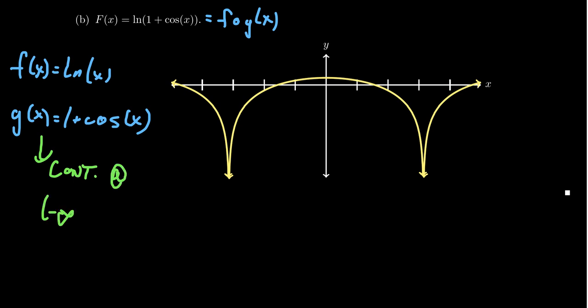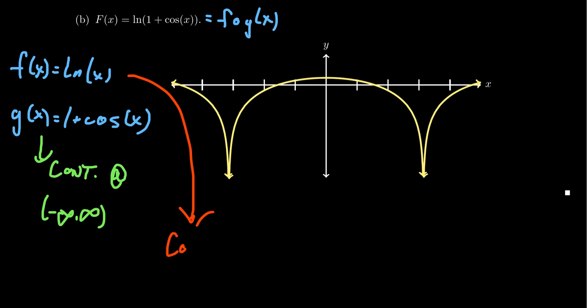G is continuous from negative infinity to infinity. We know that cosine of x is a trigonometric function, continuous on its domain which is all real numbers. Adding one to it just shifts the graph up, which doesn't change continuity. What about the natural log? The natural log's domain is not all real numbers — it is continuous on its domain, but the natural log's domain is the interval zero to infinity.